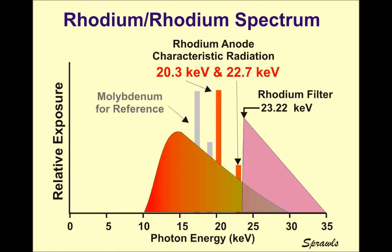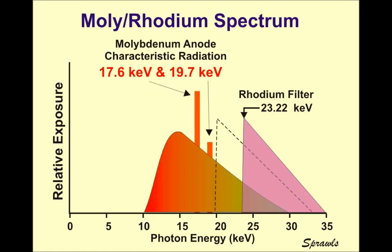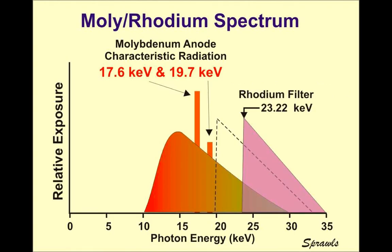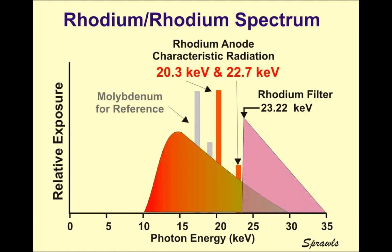The effective X-ray beam is now higher energy, allowing more penetration. This rhodium-rhodium combination is used for bigger patients. To summarize the transition: we go from molybdenum-molybdenum, to molybdenum-rhodium, to rhodium-rhodium — effectively creating three different combinations for varying levels of X-ray beam penetration. Feel free to drop questions and I'll be happy to answer them.